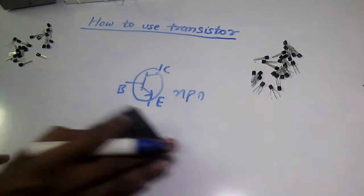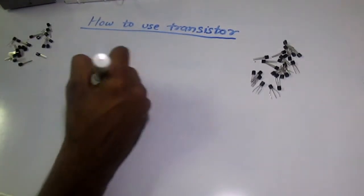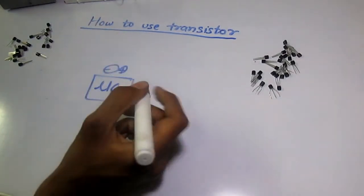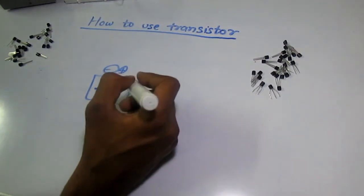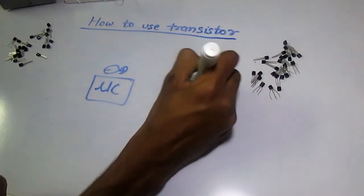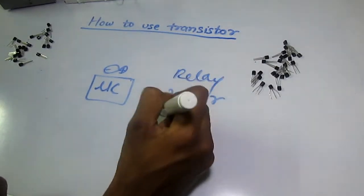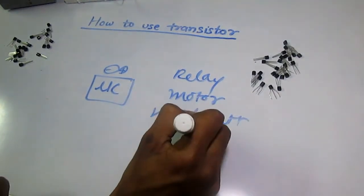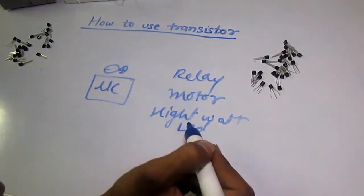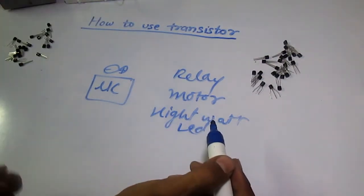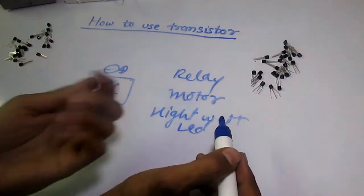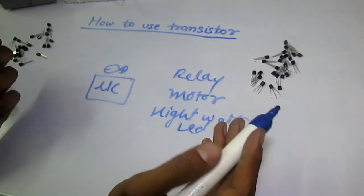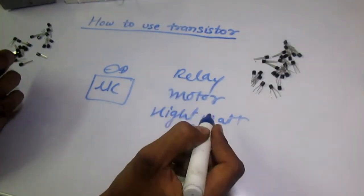How to use a transistor with a microcontroller like Arduino. If you have to drive a load like a relay, motor, or high-watt LED bulb, the microcontroller can't provide enough current to drive these loads directly. To drive them, you need a driver.